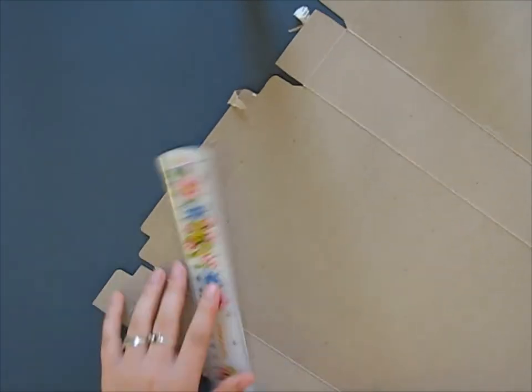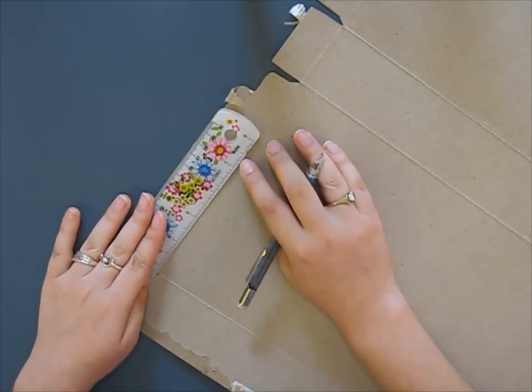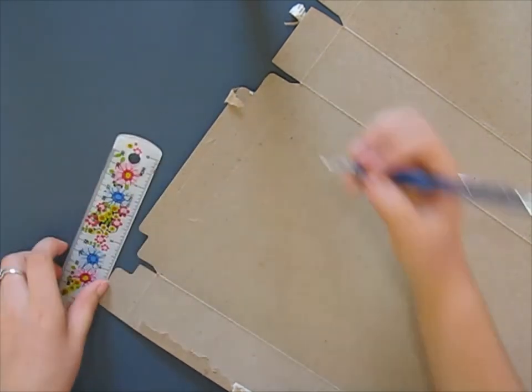After that, you want to use the measurements you got from your envelope to cut out two rectangles out of the cereal box. These will be our covers.